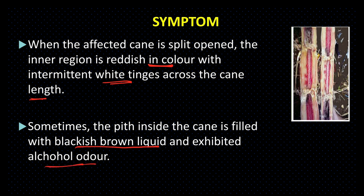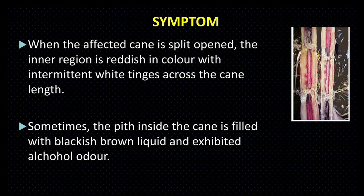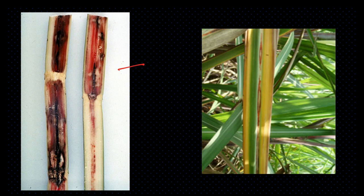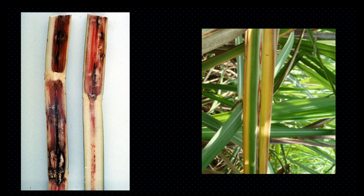जब हम affected cane को cut करके देखते हैं तो हमें red color का discoloration दिखाई देता है, और बीच-बीच में white color के tissue भी दिखाई देते हैं। बाद में इसका color dark brown हो जाता है, और इसमें alcohol odor आती है — मतलब सड़ने की बदबू। यह है red rot का symptom। Leaf के spot का center straw color का और margin reddish brown color की होती है।